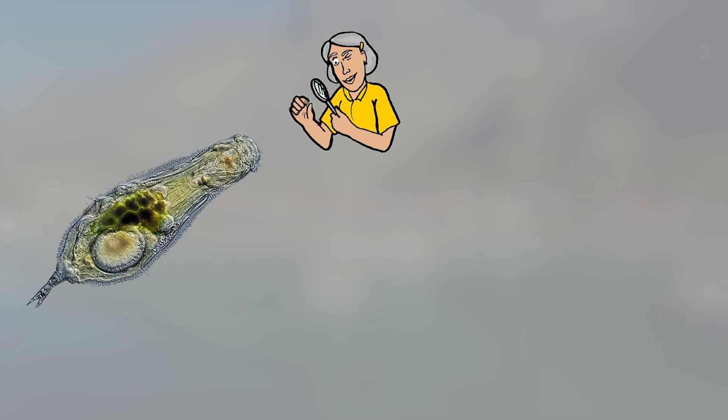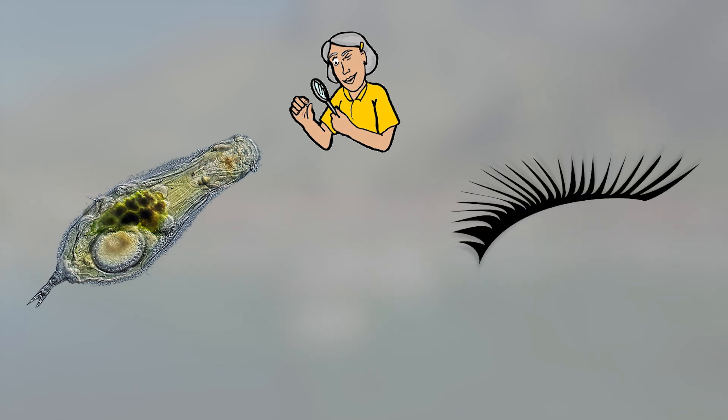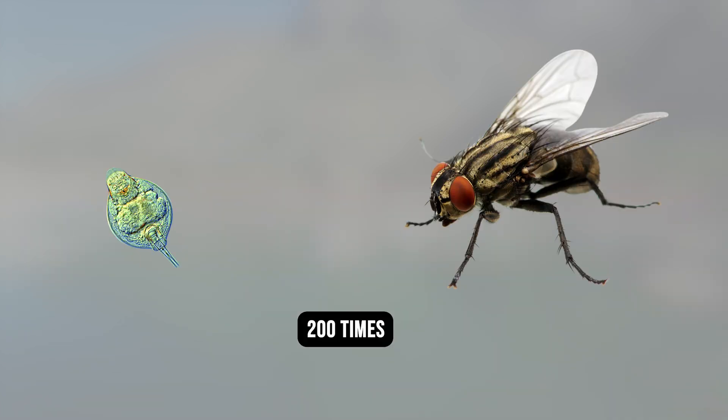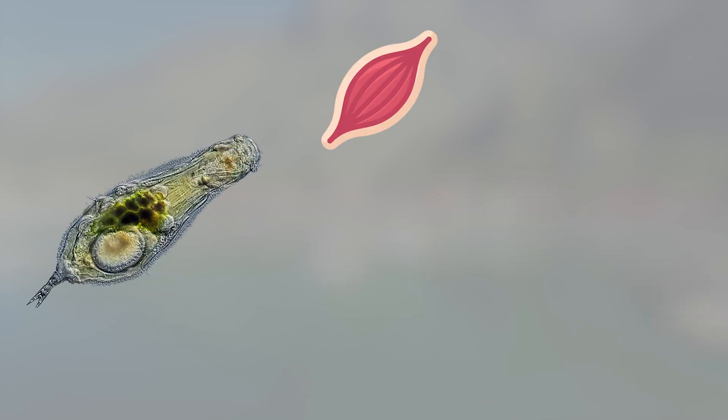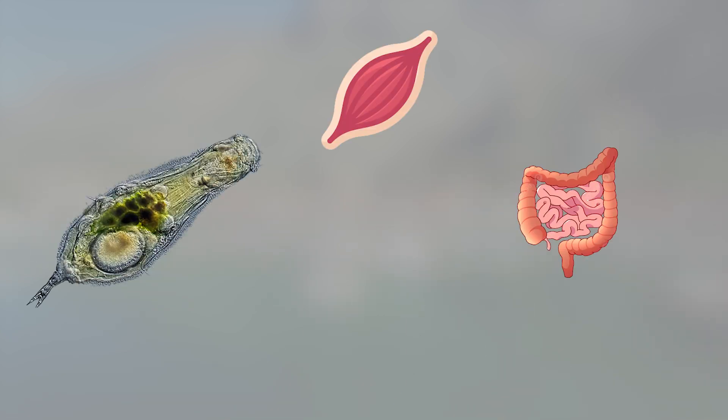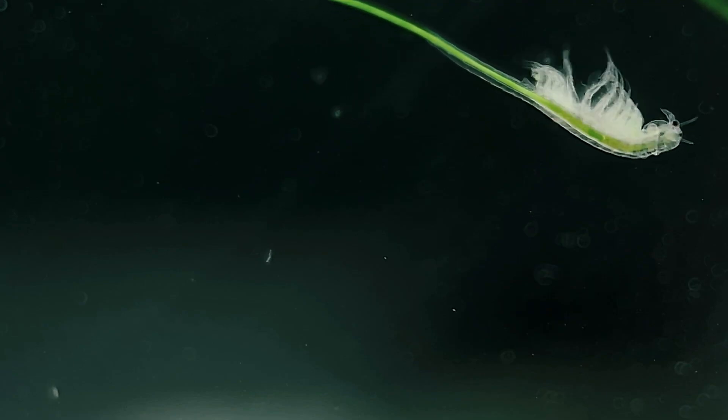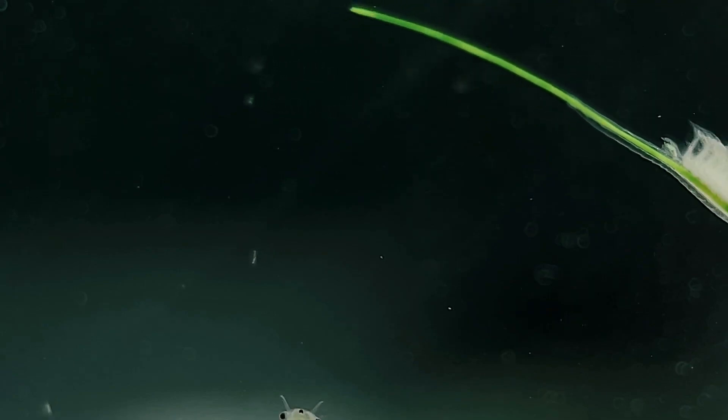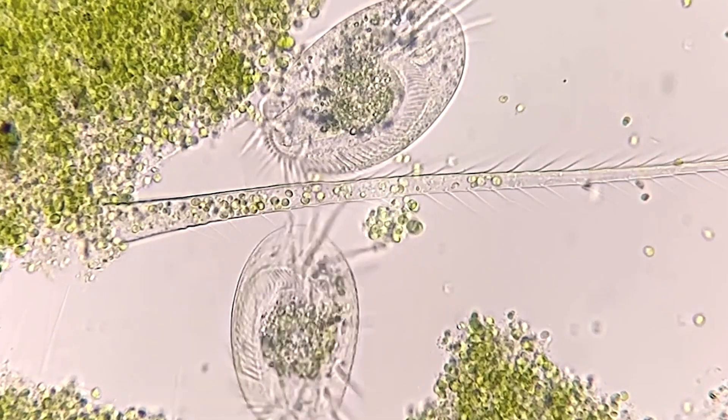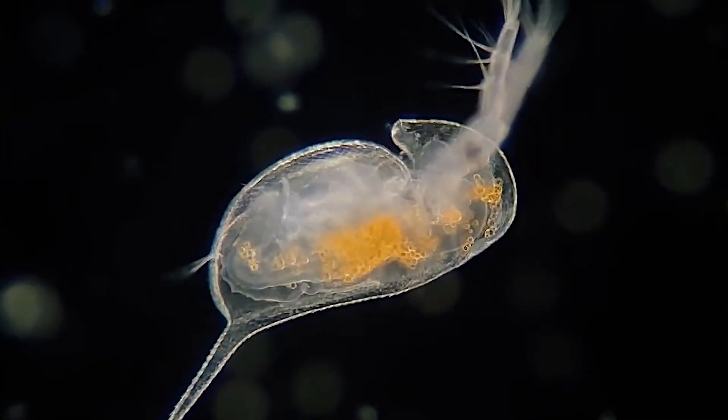Rotifers are tiny, about half the width of an eyelash, or roughly 200 times smaller than a housefly, but surprisingly complex. They have muscle tissue, a digestive system, a basic nervous network, and rotating cilia that let them swim and feed. That spinning motion is what earned them their name—rotifer, Latin for wheelbearer.